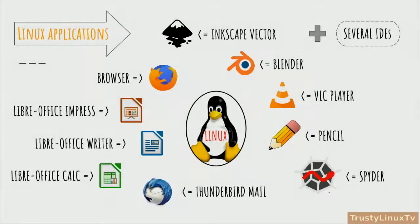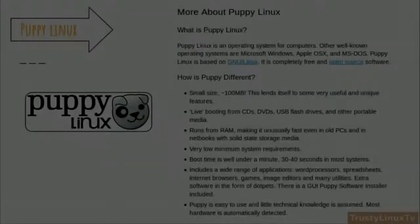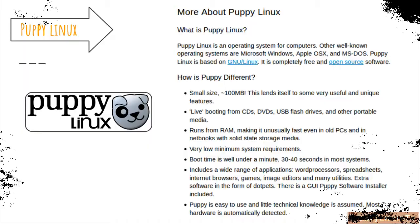Linux features high-end networking services, extensive development tools for programs, fully functional graphical user interfaces (GUIs), and a large number of applications ranging from office suites to multimedia applications. However, it remains one of the smallest operating systems that is fast as well as stable. It can even run on a memory that is as small as 2 megabytes.